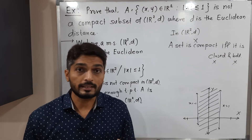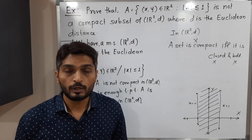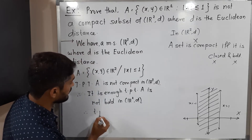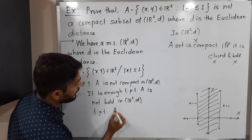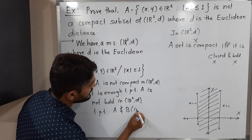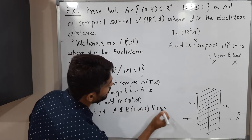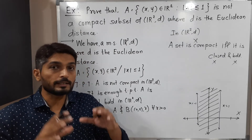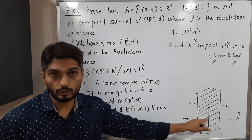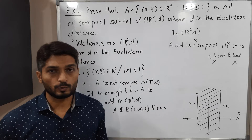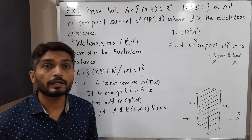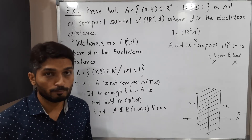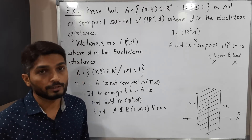To prove A is not bounded, we use the technique from previous videos. We need to prove that A is not a subset of the ball with center (0,0) and radius r, for every r > 0. That means we must find a point which lies in A but does not lie in the ball B((0,0), r).